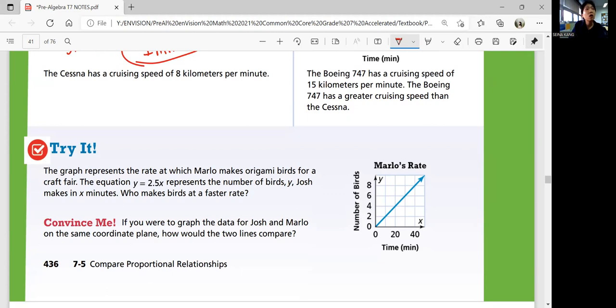So y equals 2.5x is Josh's equation. Then Marlowe's is represented by the graph. Look at some points here. You have 20 comma 4 and then 40 comma 8. So find the unit rate.